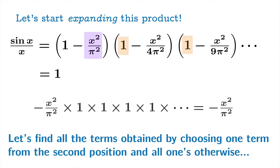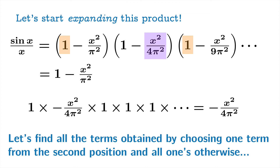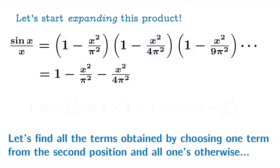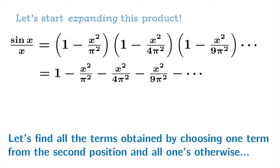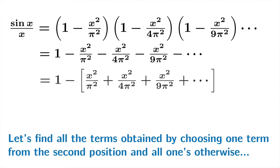So now let's find all the terms obtained by choosing one term from the second position and all ones otherwise. So for example, you could choose x squared over pi squared, and then choose all ones. And that product must surely be negative x squared over pi squared. So I'll throw that into the mix. You could choose the second position in the second factor and otherwise all ones. And you're going to get negative x squared over 4 pi squared. In the third term there, you could choose the second position and otherwise all ones. And so on. So now where are we? We claim that those are all the terms you can get by choosing one term from the second position and otherwise all ones.